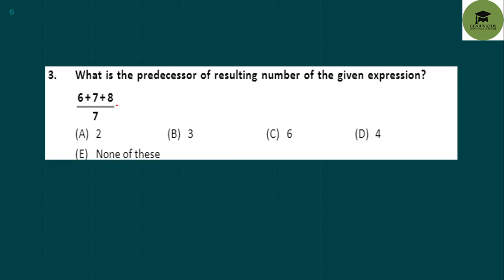Next: What is the predecessor of the resulting number of the given expression? In the numerator it is 6 + 7 + 8, and the denominator is 7. So 6 + 7 + 8 equals 21, and 21 divided by 7 gives 3. The predecessor means the exact previous number of that particular number, so that is 3 minus 1 which is 2. Option A is your correct answer.